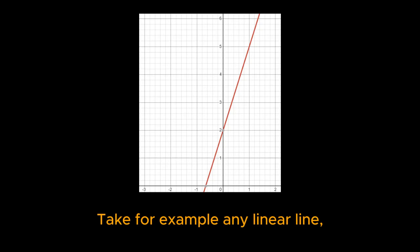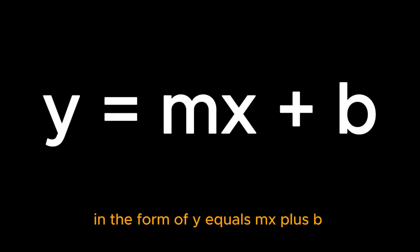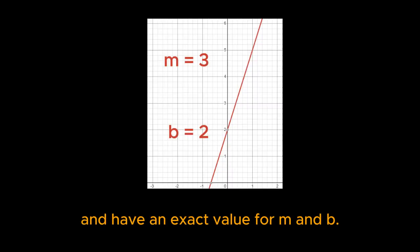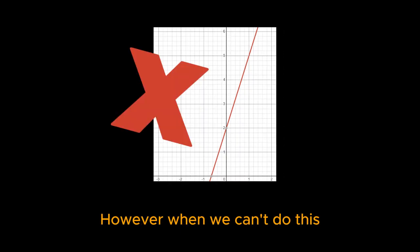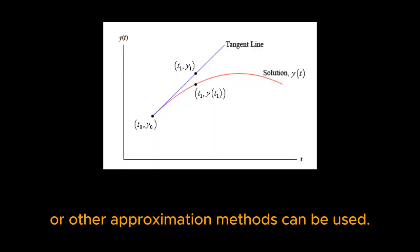Take, for example, any linear line. We can always put a linear equation in the form of y equals mx plus b and have an exact value for m and b. However, when we can't do this, Euler's method or other approximation methods can be used.